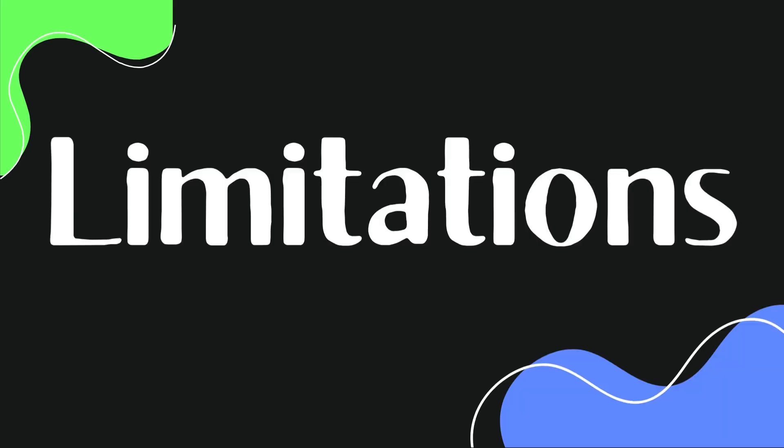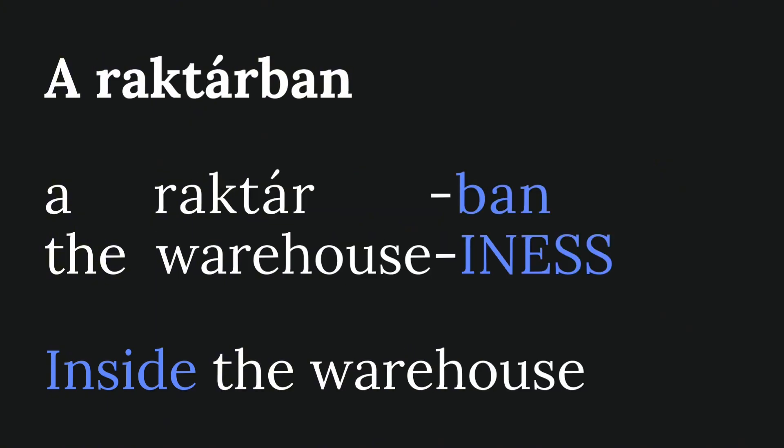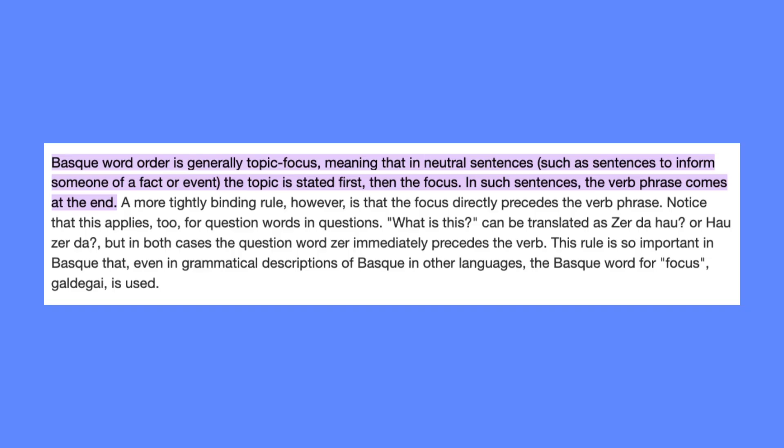Now let's get into some limitations of glossing. Glosses are not a replacement for thoroughly explaining grammatical categories in a work. In Hungarian, for example, it's not enough to just gloss the -ben in könyvben as INES because ben is not always the suffix used for the inessive case — Hungarian makes extensive use of vowel harmony, so könyvben takes -ben because ö is a front vowel, but a word like raktár would take -ban instead. An author would have to explain why the suffix varies. The same applies to word order — in Basque, word order determines topic and focus, which is often left out in glosses but should be explained in any relevant work.